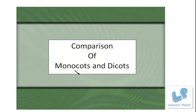Monocots are those which have a single cotyledon, whereas dicot is the one which has two cotyledons. But just following the meaning of these terms is not actually satisfactory — it is not clearly understood exactly what type of characteristics are there in such plants. By following just the meaning, are you really able to understand which type of plant will come under which category? So in today's session, I am going to discuss the basic differences between monocots and dicots, highlighting some important features so that you can classify and identify the plants on those particular bases.